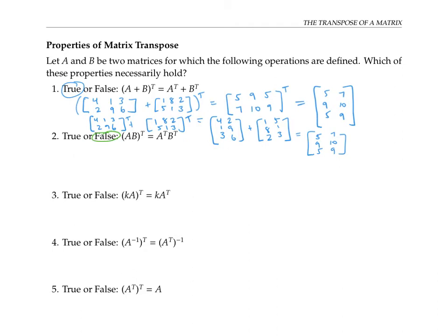But there actually is a relationship between transpose and multiplication. Like with inverses, if we take the product backwards — so here we do (AB) transpose, but on the other side we do B transpose first and then A transpose — this does turn out to be true. We can check that the dimensions work out: if A is an M by K matrix and B is a K by N matrix, then B transpose is N by K and A transpose is K by M, so that multiplication also makes sense, and the resulting matrices on either side will be N by M.